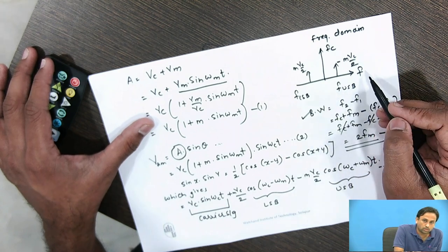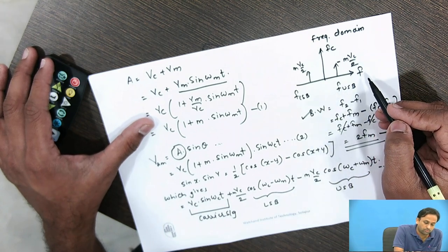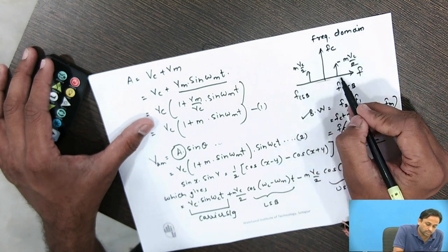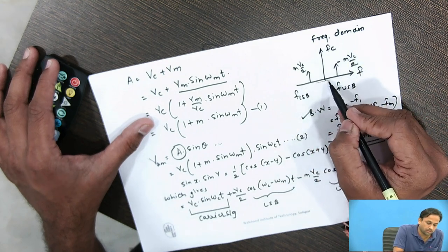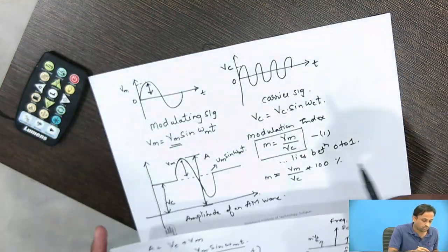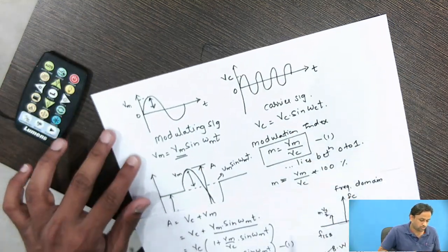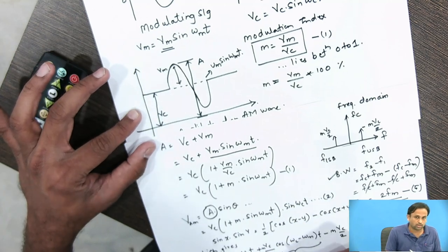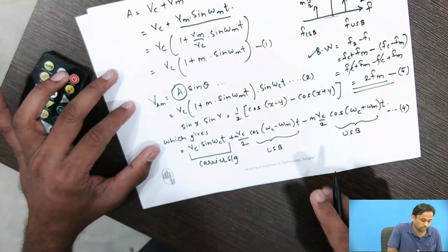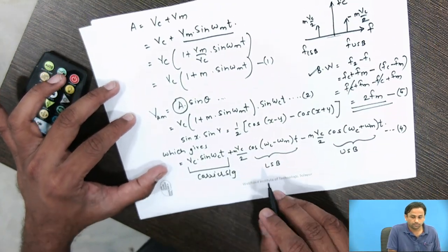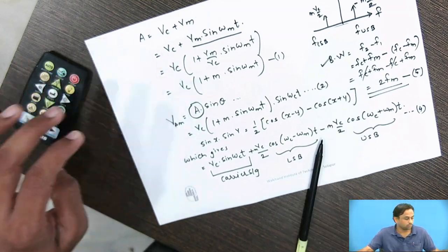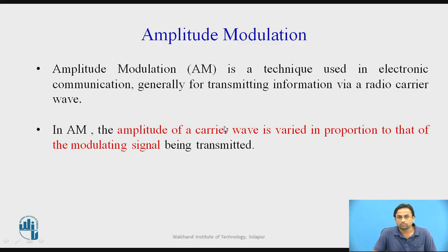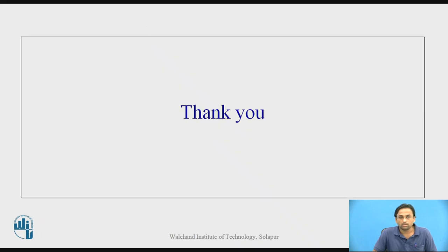If you observe the AM signal using a spectrum analyzer in the frequency domain, the signal appears with the three spectral components described. In the time domain, the AM modulated signal has the characteristic envelope shape. This concludes the derivation and analysis of the amplitude modulated signal. Thank you.